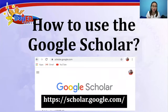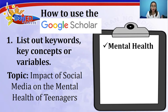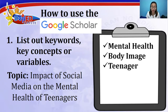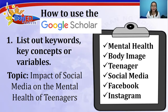Now let me give some tips on how to use Google Scholar. First, we must list out keywords, key concepts, or variables. For our example topic — the impact of social media on the mental health of teenagers — keywords to be typed in the Google Scholar search bar include mental health, body image, teenager, social media, and more specifically Facebook or Instagram.